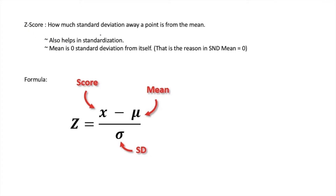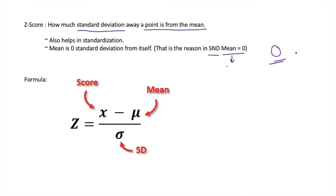Z-score tells us how much standard deviation away a particular point is from the mean. If I ask you how much standard deviation away the mean is from itself, it is nothing but zero — the mean is zero standard deviations away from itself, because it is exactly the same point. That is the reason the standard normal distribution takes mean as zero.